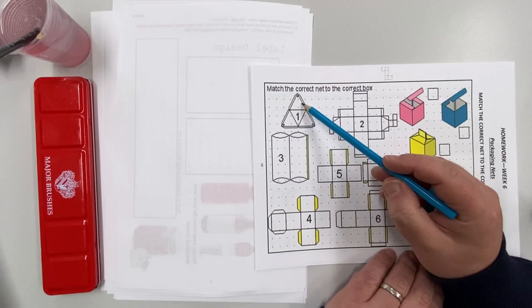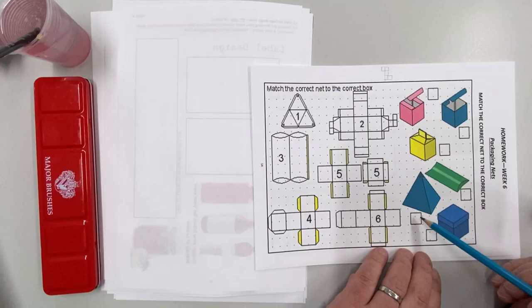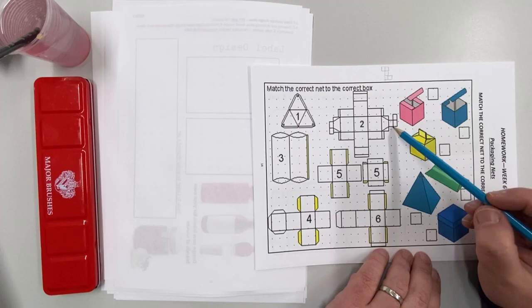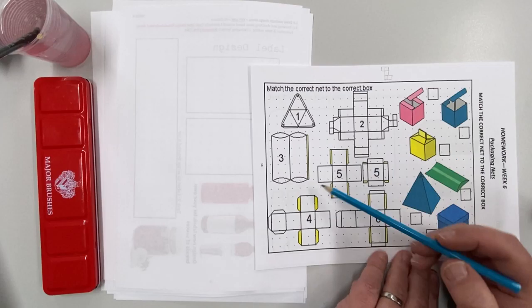So you can put down number one anywhere here. Number two, this is quite a large box with all different types of flaps and tucks and all the rest of it, so which one would it be? Number three, almost like a cylinder shape. Can you see anything here that's like a cylinder shape, and which box would it currently correspond to?